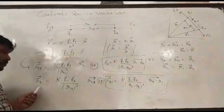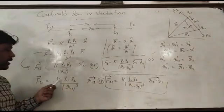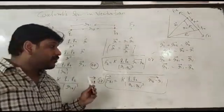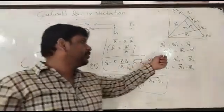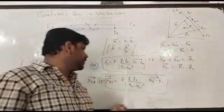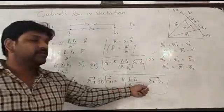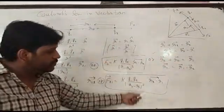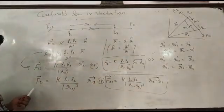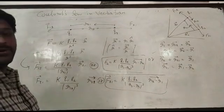Similarly, force on 2 due to 1 in vector form, k q1 q2 upon r12 cube times r12. Now what is the value of r12 in terms of coordinate? r12 equal to r2 minus r1. Replace this value here, that is the coordinate form F12 and F21, and that is the vector form of F21 and F12.